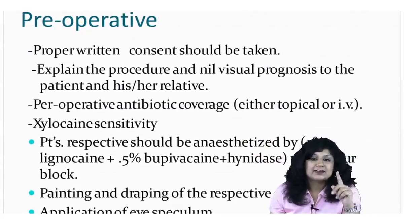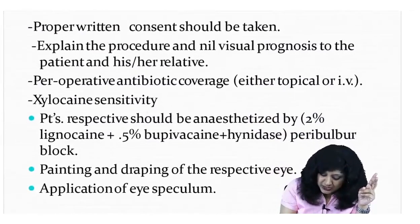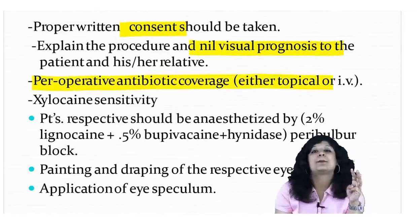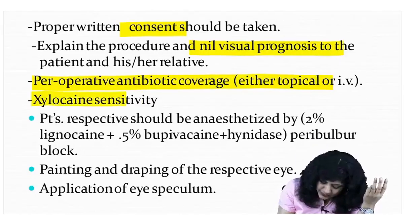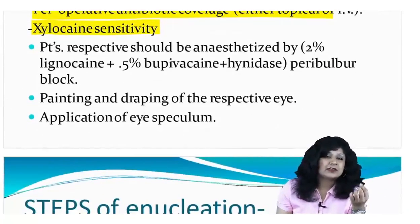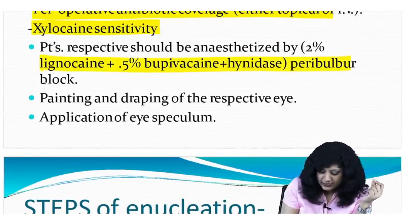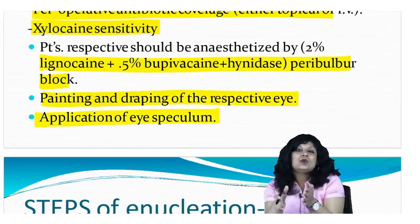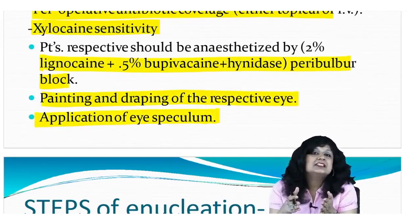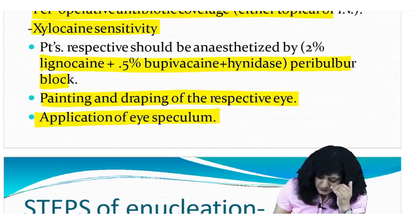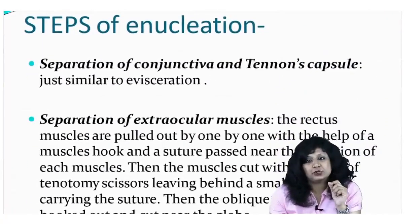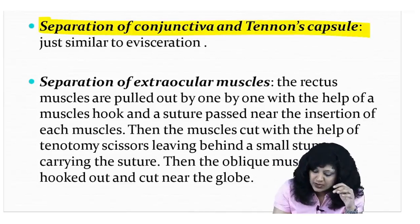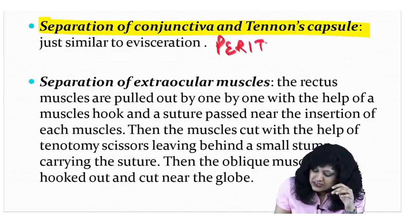The pre-operative steps for enucleation are similar: take proper consent, explain nil visual prognosis, give pre-operative and intra-operative antibiotic coverage, do xylocaine sensitivity test, administer peribulbar block with lignocaine, bupivacaine and hyaluronidase, perform painting and draping, and apply the eye speculum. Up to the application of the eye speculum, all steps are the same as for evisceration.